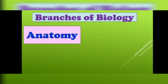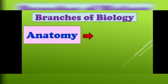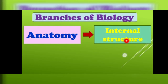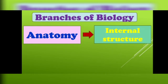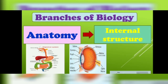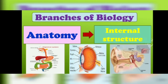Now come towards the next branch of biology, that is anatomy. We can define anatomy as the study of internal structures of living organisms. For example, the study of the internal structure of the digestive system, the eye, and the ear — all of these will be included in anatomy.